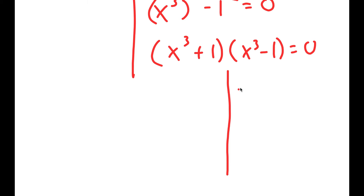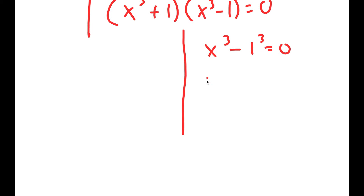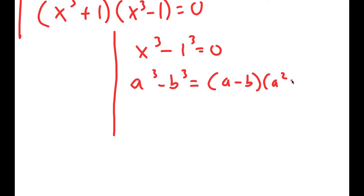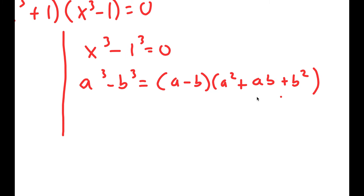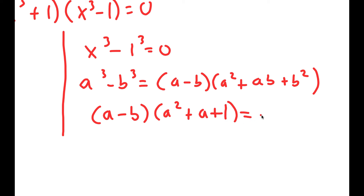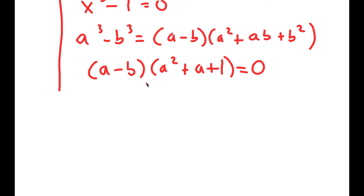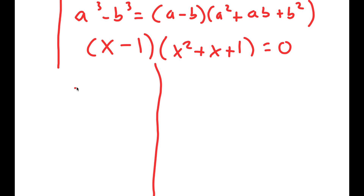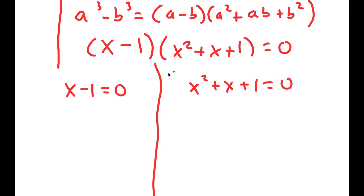For x to the power of 3 minus 1 equals 0, I'm going to rewrite this as x cubed minus 1 cubed equals 0, and use the property a cubed minus b cubed equals a minus b times a squared plus ab plus b squared. This turns into x minus 1 times x squared plus x plus 1 equals 0, which gives me two more equations: x minus 1 equals 0, and x squared plus x plus 1 equals 0.